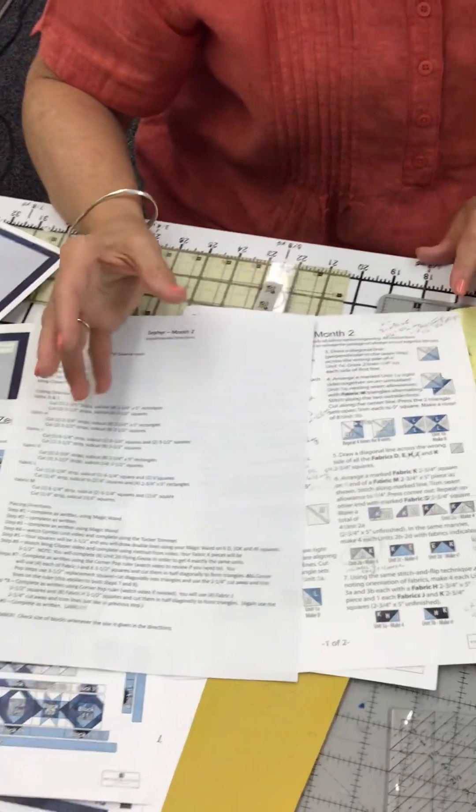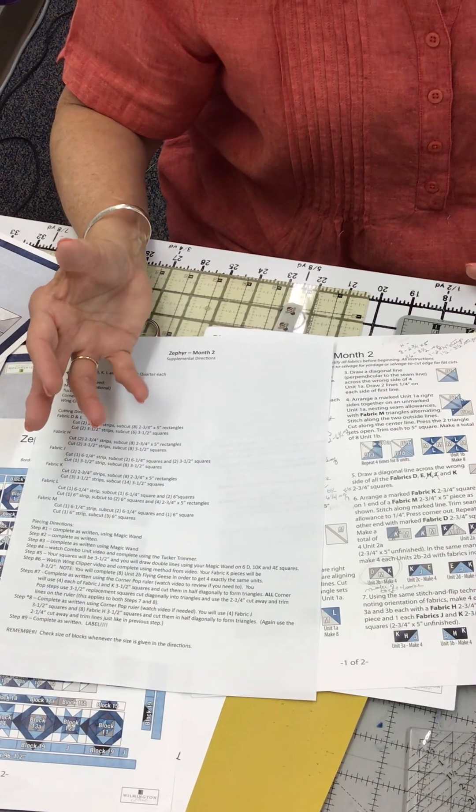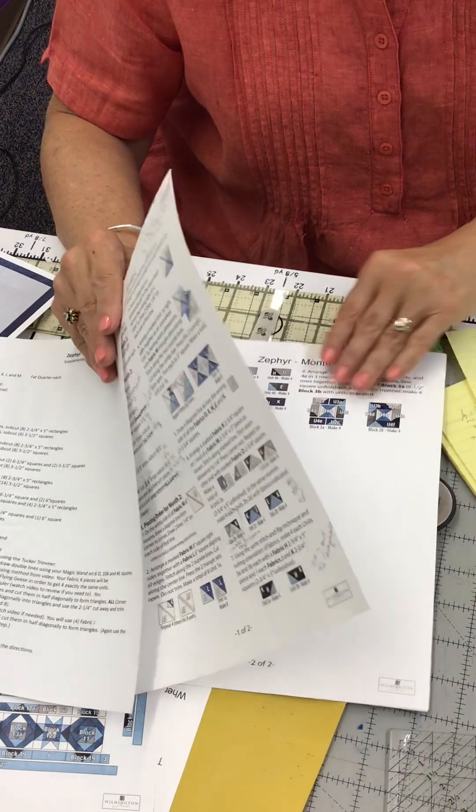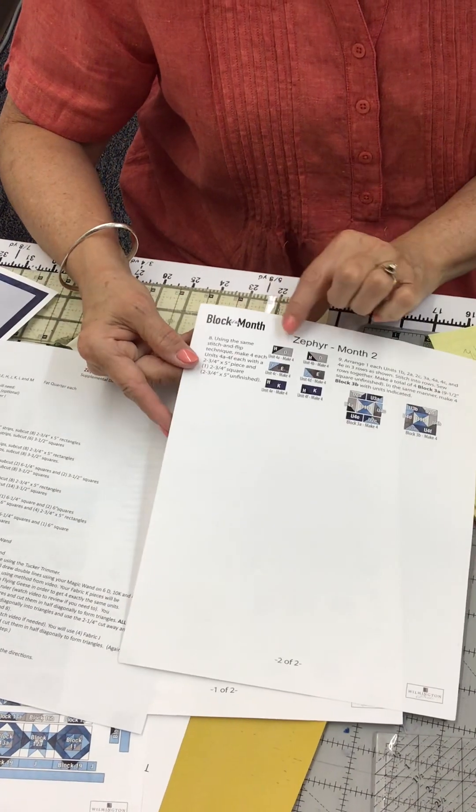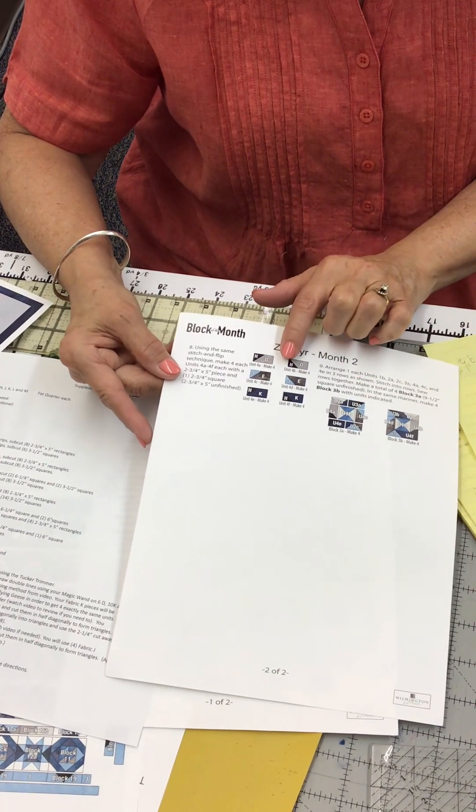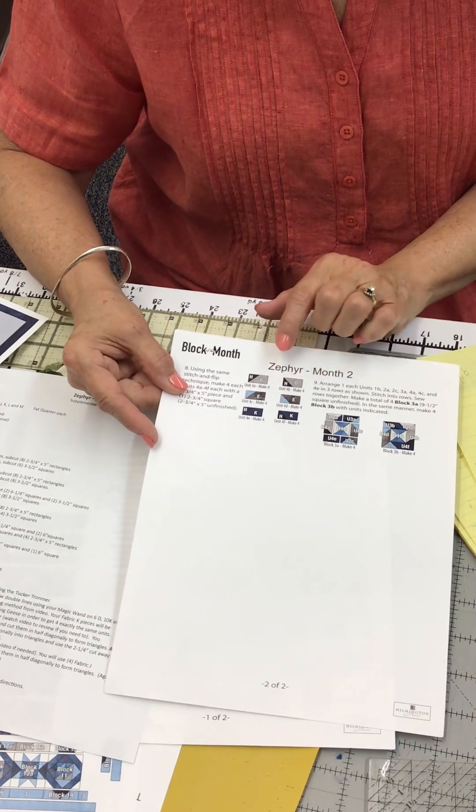Step eight is the same. It also uses the corner pop. You'll be using the three and a half inch H and J. And you will be noting, again, the orientation of the units and how many you need to end up with. And you'll use, again, the two and a quarter inch marks on the ruler.